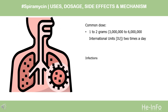Dose. The dose of this medicine will be different for different patients. For oral dosage forms — capsules or tablets — for treatment of infections: Adults and teenagers, 1–2 grams (3 million to 6 million international units, IU), 2 times a day; or 500 milligrams to 1 gram (1,500,000 to 3 million IU), 3 times a day. For severe infections, the dose is 2 to 2.5 grams (6 million to 7,500,000 IU), 2 times a day.